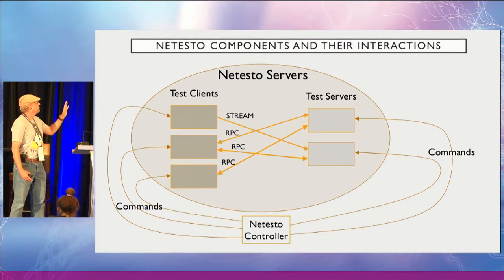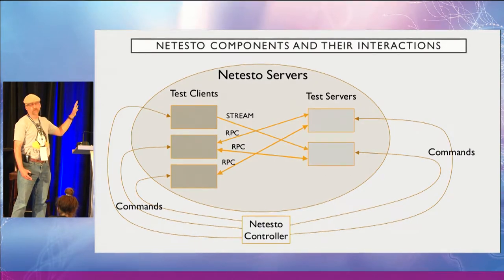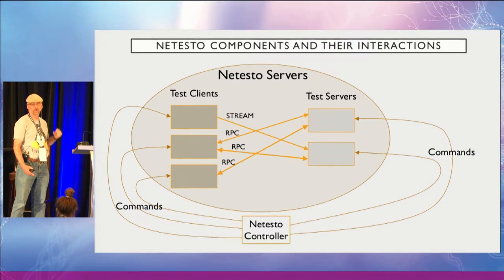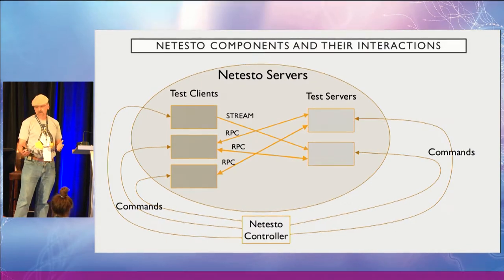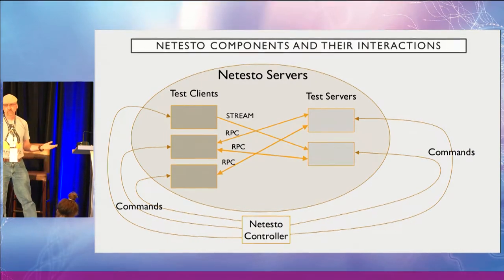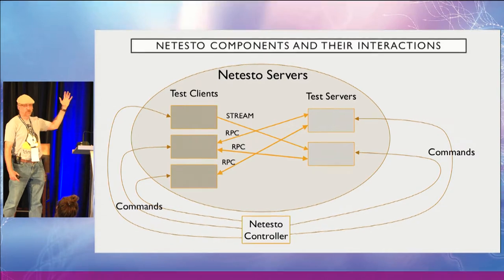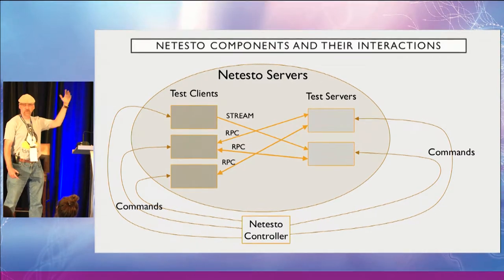The type of flows it supports right now are based on NetPerf — in particular, TCP stream and TCP request-reply. It would be very easy to add support for UDP and others; I haven't done it because I haven't had a need to. The NetTesto controller talks to the NetTesto servers and gives them commands: start flows, collect data, et cetera.